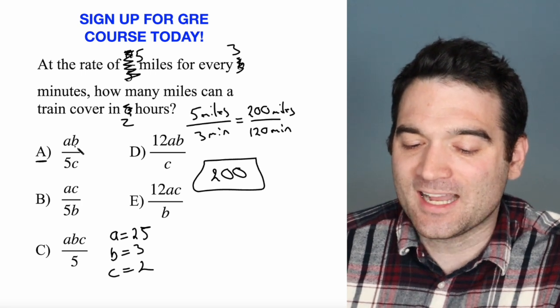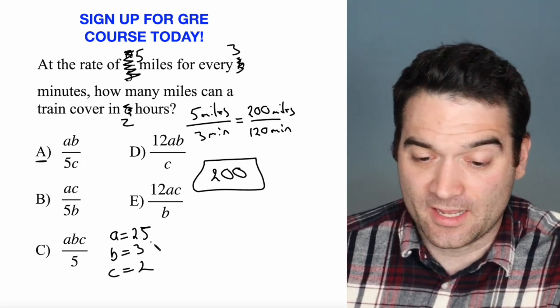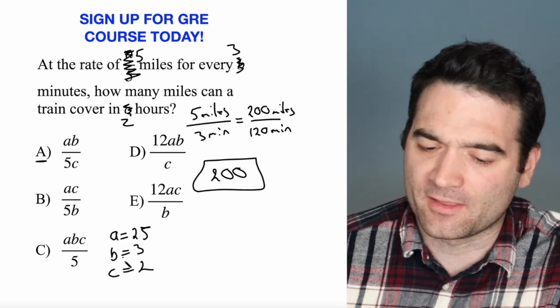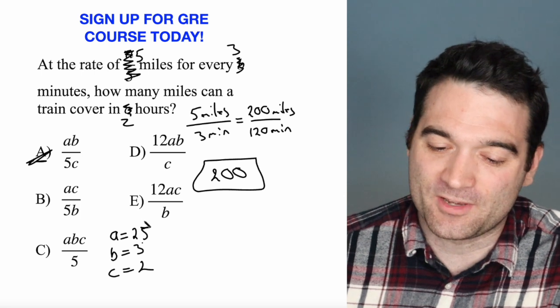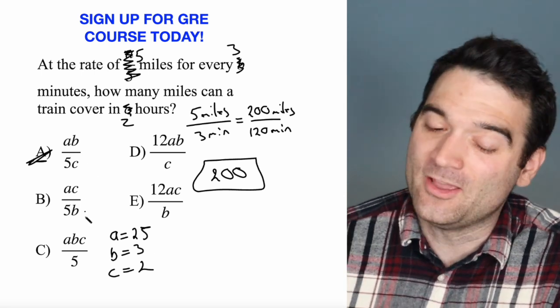We'll start with A. A times B, which is 25 times 3. You can use your calculator for this. It does not come out to 200. It's A times B, so 75 divided by 10. No, thank you.